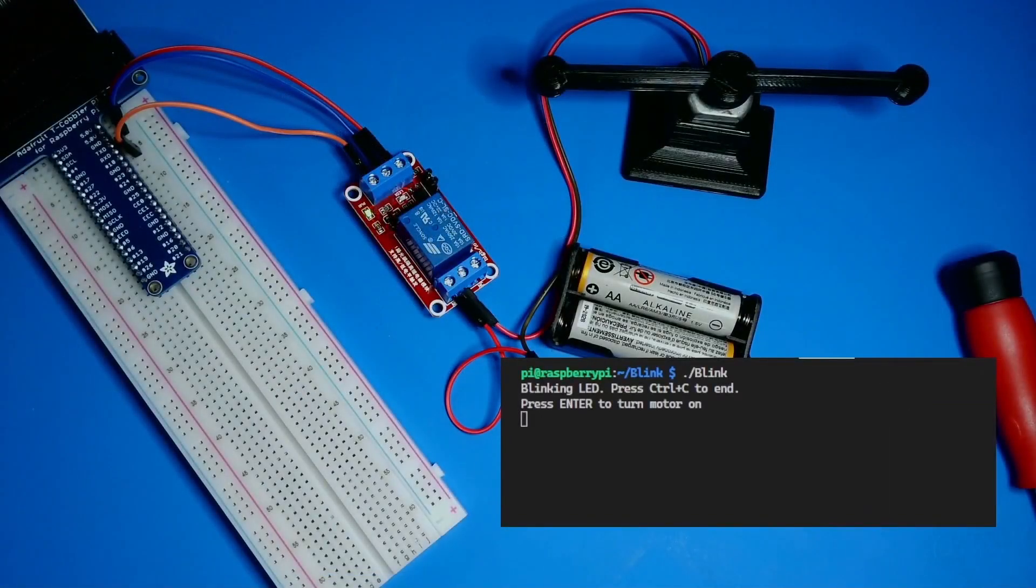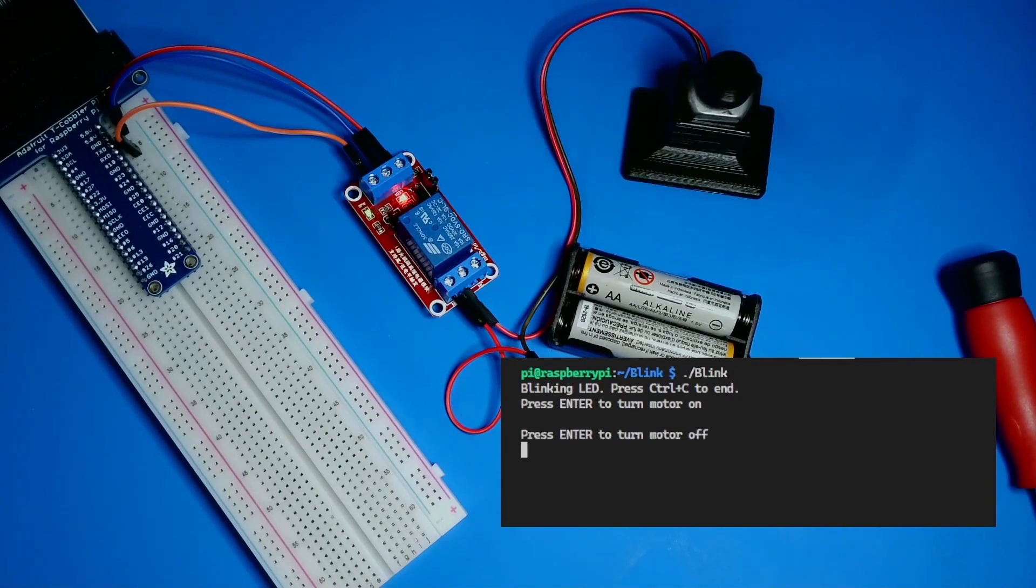I've redeployed the app, and I've already got it running. Now I'll press enter to toggle the relay and close the battery circuit. The motor is spinning. I'll press enter again to stop the motor.